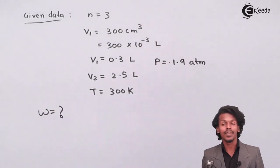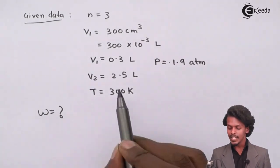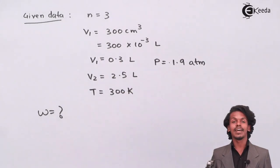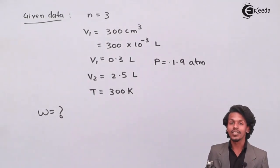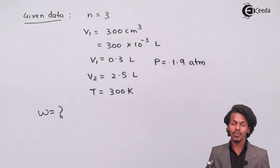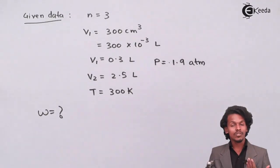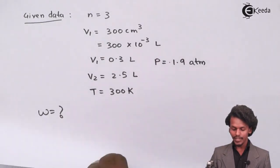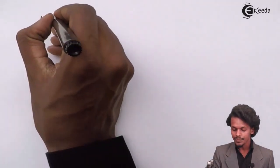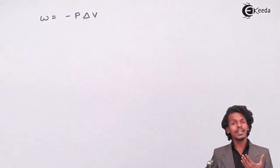The temperature and number of moles of gas are not playing any role here, because the formula for work relates pressure and change in volume — not the number of moles — when we are talking about work done isothermally in an irreversible process. The formula is W = −P·ΔV.